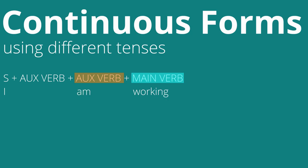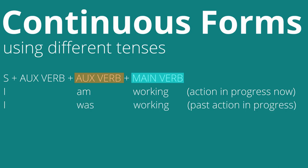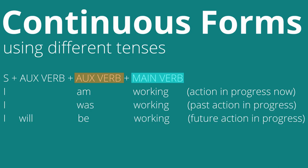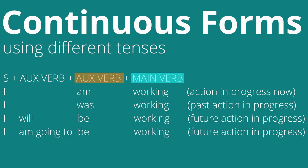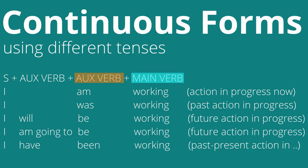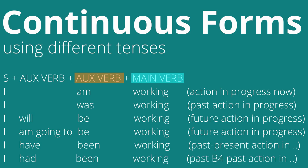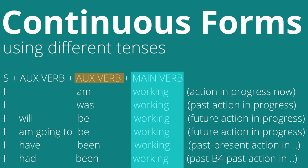Here are some examples of the continuous form: I am working, I was working, I will be working, I am going to be working, I have been working, I had been working. Remember that in the continuous we always have a main verb in the -ing form, it always has an auxiliary verb which is the be verb, and sometimes it has another auxiliary verb.